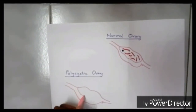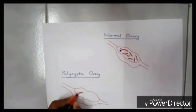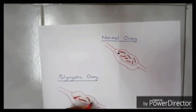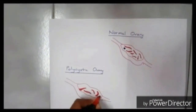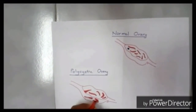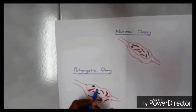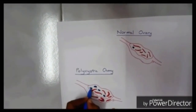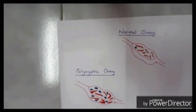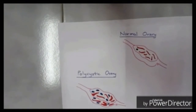Treatment of PCOS: Eat a healthy diet. Take birth control pills. If you are not planning to become pregnant, ask your doctor for medications that may help you. Diagnosis of PCOS has no definite test, but tests include a thyroid function test, fasting glucose test, and lipid level test.